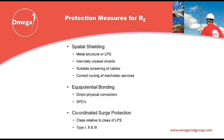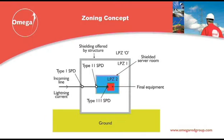The final measure of protection for your electronics takes the form of coordinated surge protection devices. Looking at a typical generic installation covering power only for ease of explanation, where a structure is fitted with a Level 3 structural protection system: it is important to select a Type 1, Level 3, Class 4 surge protection device to match the level of structural protection for equipotential bonding at the main distribution board. This will offer equipotentialisation between the building services and the incoming service at the point of entry into the structure.